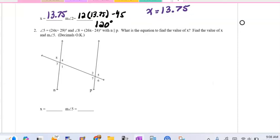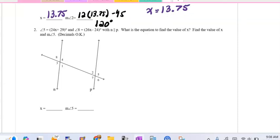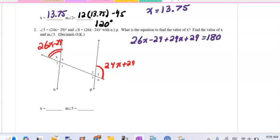Moving on to problem number 2, again, the first thing I'm going to do is label. So angle 5 is 24x plus 29, and angle 8 is 26x minus 24. Those are same side exterior angles, and remember, same side exterior angles are supplementary. So the equation would be 26x minus 24 plus 24x plus 29 is equal to 180 degrees.